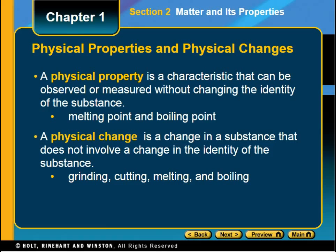You can have physical properties and physical changes. A physical property is a characteristic that can be observed or measured without changing the identity of the substance — so when you measure it or look at it, the substance hasn't changed. For example, the melting point of iron just means you went from iron solid to iron liquid, or the boiling point of water means you went from liquid water to gas water. If you measure an element's hardness or malleability, you still have the same element.